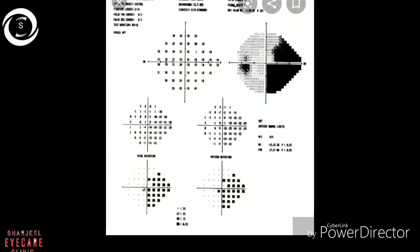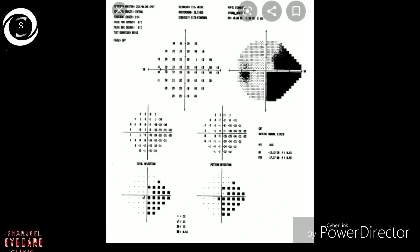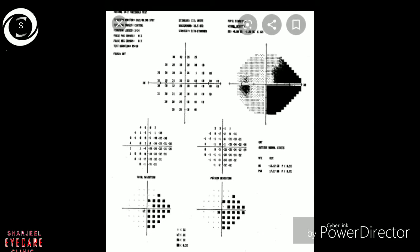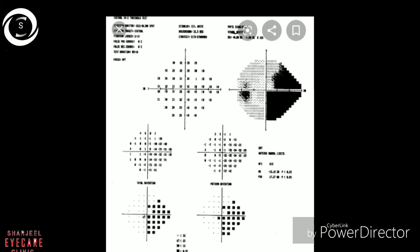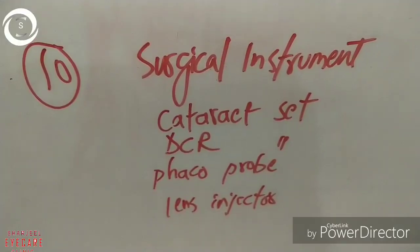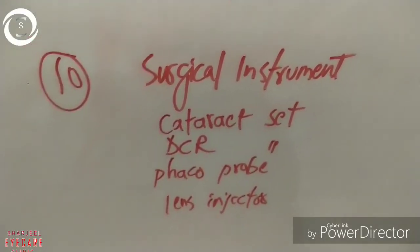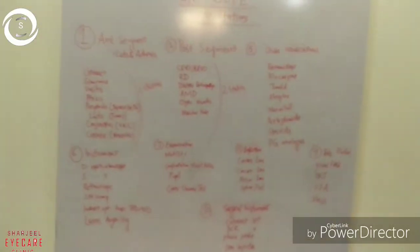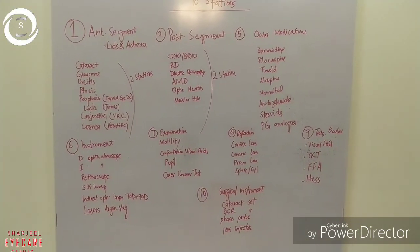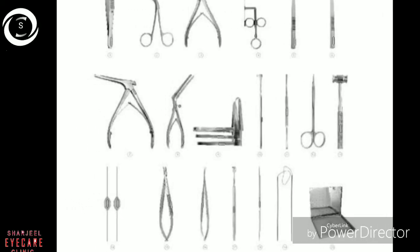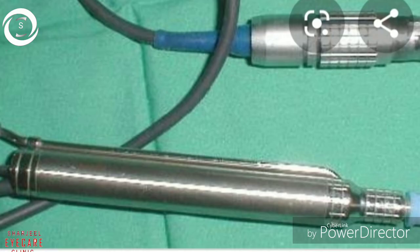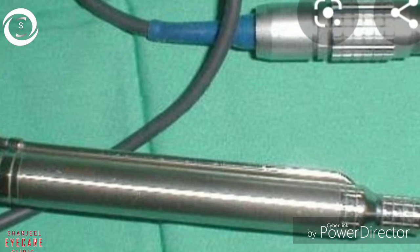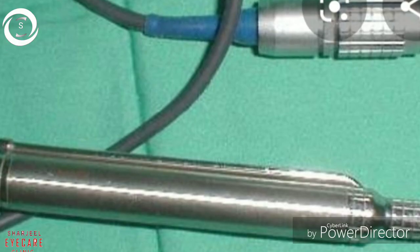Here a visual field printout is shown — you should know the differences between neurological and glaucomatous defects. The neurological disease shown here is respecting the vertical meridian. For the tenth station, surgical instruments: you can be shown cataract instruments, DCR instruments, FACO probe, or IOL lens injector. Here a DCR set with bone punch is shown, and here the FACO probe is shown. You should be able to identify and state the use of each instrument. That's the pattern on which the OSPI will be made — thank you.